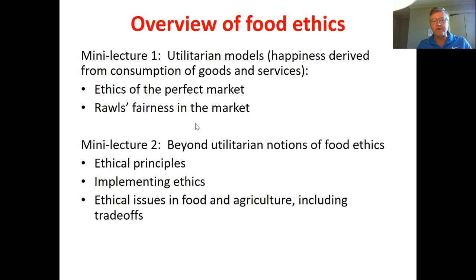Another possibility of market failure is externalities — when production or consumption by one agent has a negative effect on others. A production externality example is the burning of biomass or straw that produces smoke, which has a negative effect on someone else's health. A consumption externality example is disposing of batteries into the water supply, causing heavy metal pollution for others. Externalities can be positive, where others benefit, or negative, where they do not — either case justifies government involvement.